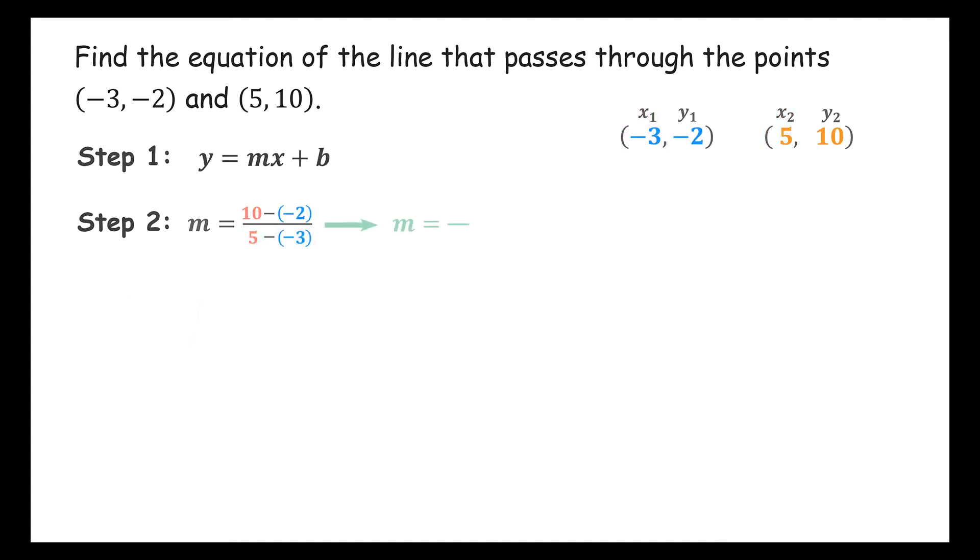We calculate 10 subtract negative 2 to get 12 in the numerator, and 5 subtract negative 3 to get 8 in the denominator. So the slope is m equals 12 over 8, which reduces to 3 halves.